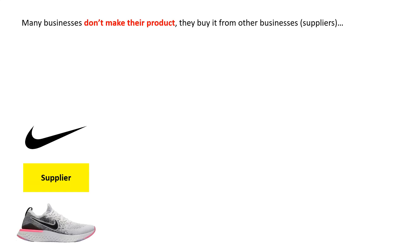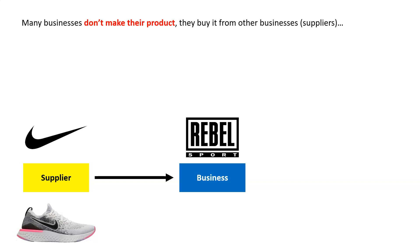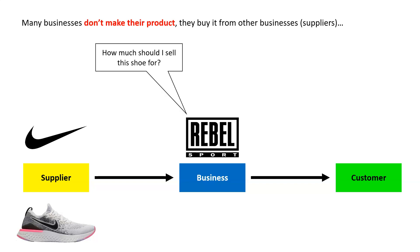To use an example: Nike makes running shoes, so they would be a supplier, and Rebel Sport is a business which sells them. So Rebel Sport sells the shoes to the customer — but for how much? Sometimes it's not actually Rebel Sport's decision; they might ask their manufacturer or supplier how much they should sell the shoe for.